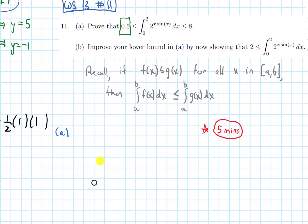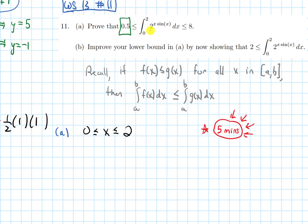I want to give you five minutes to try this problem, so pause the video. Let's talk about it together now. For Part A, the interval we're looking at has x between 0 and 2. What I want to do is build a chain of inequalities involving the function I'm integrating — 2 to the x sine x power. So first: what is x times sine x always in between?